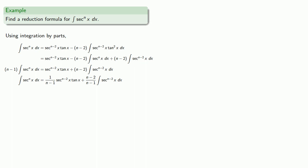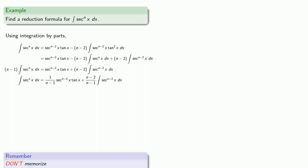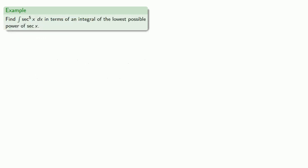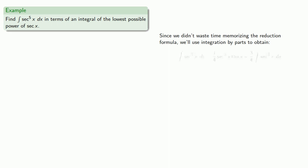And so we have this formula that gives us the way to find the integral of secant to the nth. Don't memorize formulas — you should be able to derive this as you need it, because all we really did here was use integration by parts and the trigonometric identities. For example, if I wanted to find the integral of secant to the fifth, while there is a reduction formula, don't memorize it. Since we didn't waste our time memorizing the reduction formula, we'll use integration by parts to obtain our result.